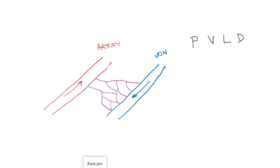Now, if pressure, viscosity, the length of the tube, and the diameter of the tube were to increase, what would that do to flow? Well, if pressure increases in the system, then we'd expect flow to increase. If the viscosity of the blood increases, then we might expect flow to decrease. If diameter increases, flow would increase.